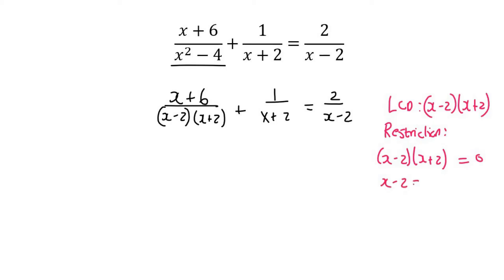So then we say x-2 equals 0, or x+2 equals 0, and therefore x must never equal 2, or x must not equal negative 2. What that means is that later when we get our answer, we should make sure it's not equal to one of those.